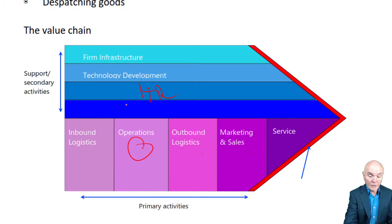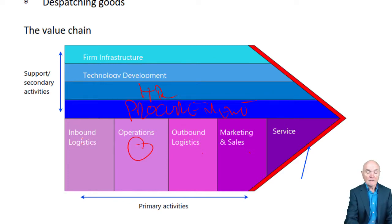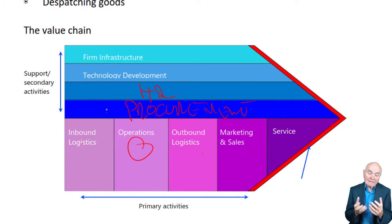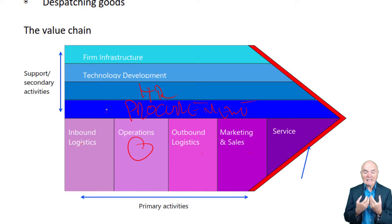Finally, we have procurement. Procurement really is placing orders. Porter divided it from inbound logistics, which is getting the goods. Procurement is placing orders for the raw materials, but it could also include the procurement of machinery, premises, and all the non-current assets. So having an expert buying department can be important.